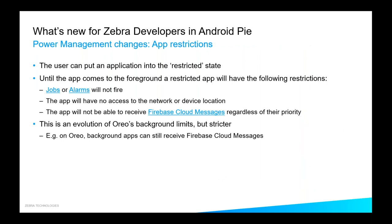The second type of background restriction which is new in Pie — what they call 'app restrictions' — is a restricted state that the application can be in. When it's in this restricted state, jobs or alarms won't fire in the background. It will have no access to the network or device location at all, regardless of what permissions have been granted to the application. And it is at no point in the background able to receive a Firebase Cloud message, regardless of whether that's a high priority or low priority message. It's a much stricter implementation of Oreo's background limits.